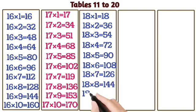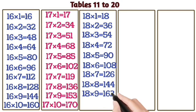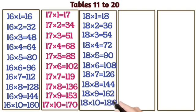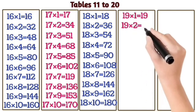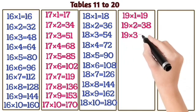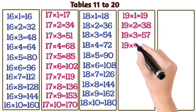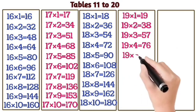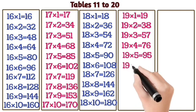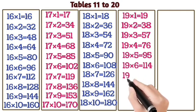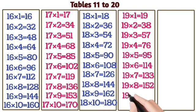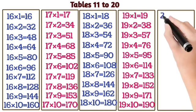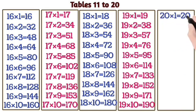18 eights are 144. 18 nines are 162. 18 tens are 180. 19 ones are 19. 19 twos are 38. 19 threes are 57. 19 fours are 76. 19 fives are 95. 19 sixes are 114. 19 sevens are 133. 19 eights are 152. 19 nines are 171. 19 tens are 190.